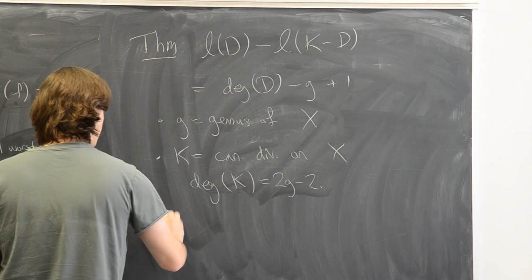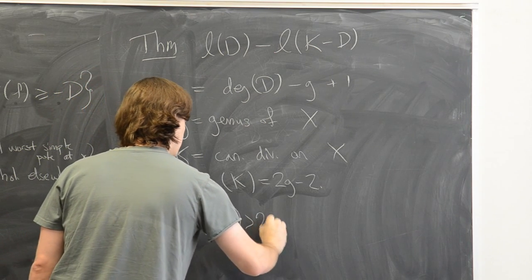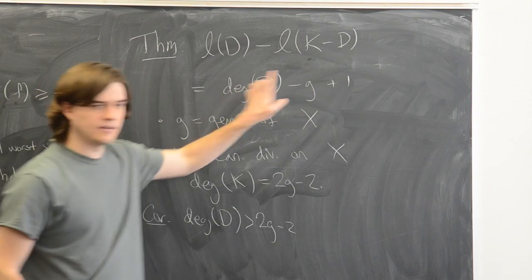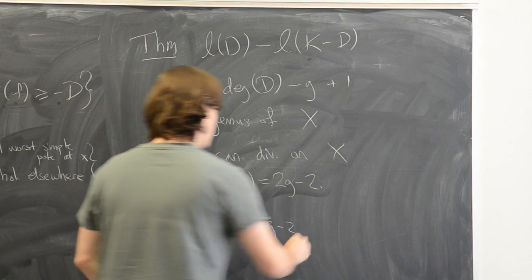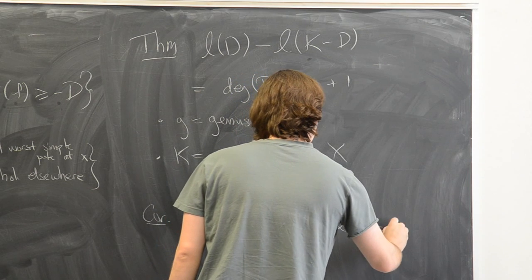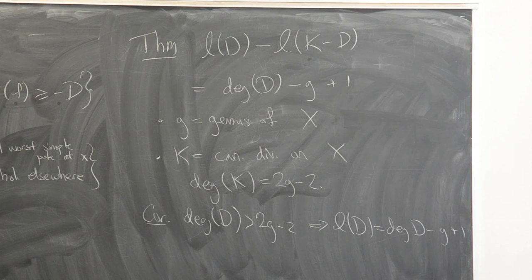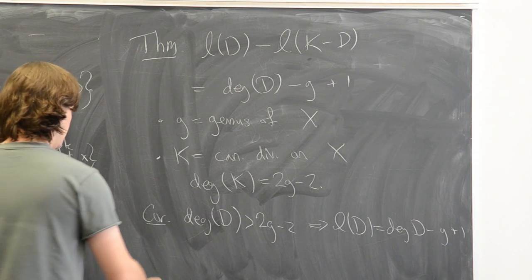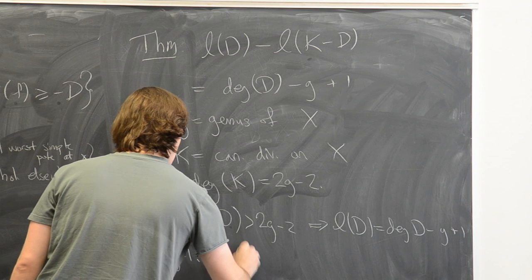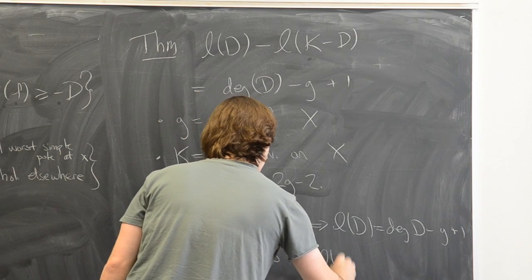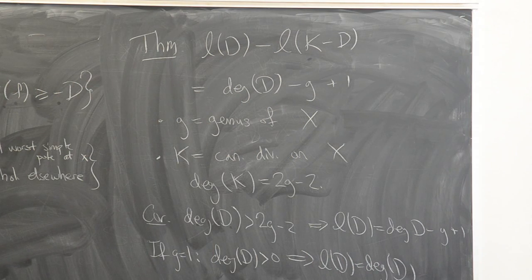A corollary: if the degree of D is greater than 2g minus 2, then K minus D has negative degree, so l(K minus D) is zero, and the theorem exactly computes l(D) as deg(D) minus g plus 1. In the special case g equals 1, which is the case of interest for us, this just says: if the degree of D is positive, then l(D) equals the degree of D. That's the only form of Riemann-Roch we'll need today.